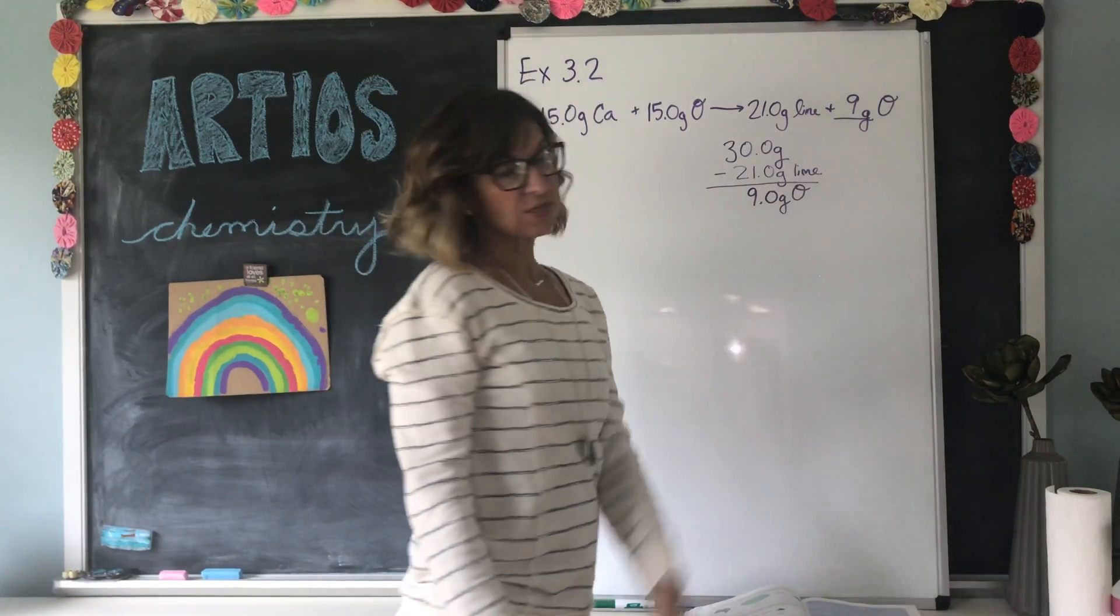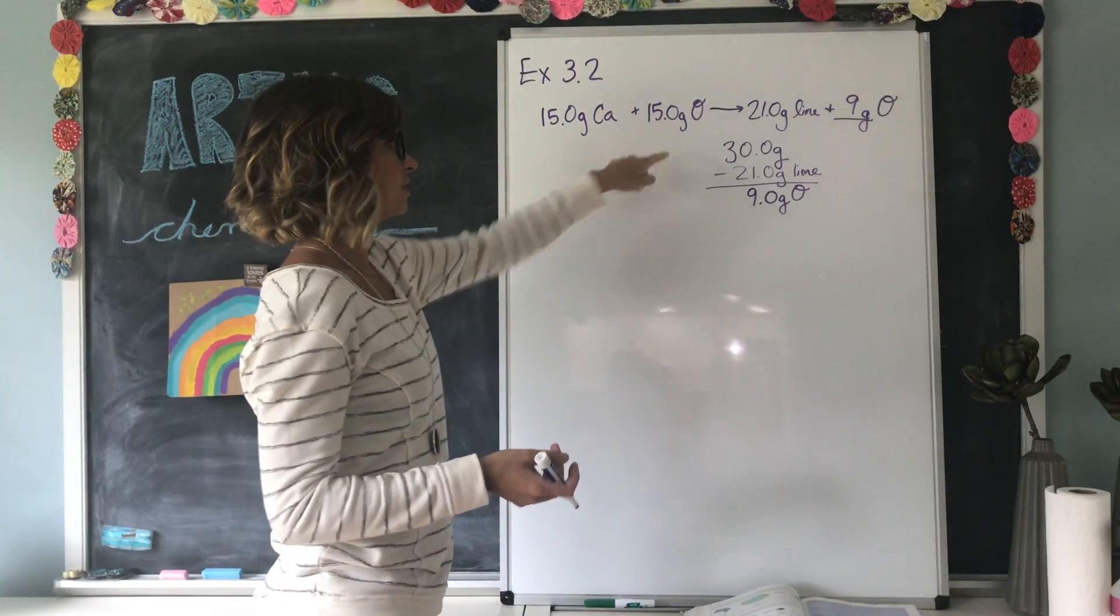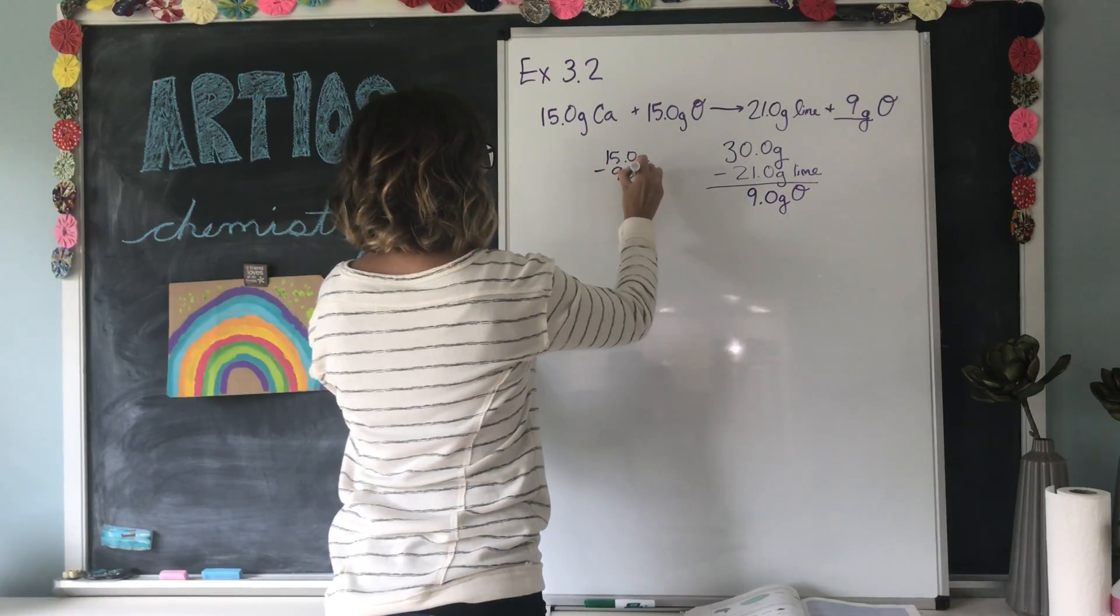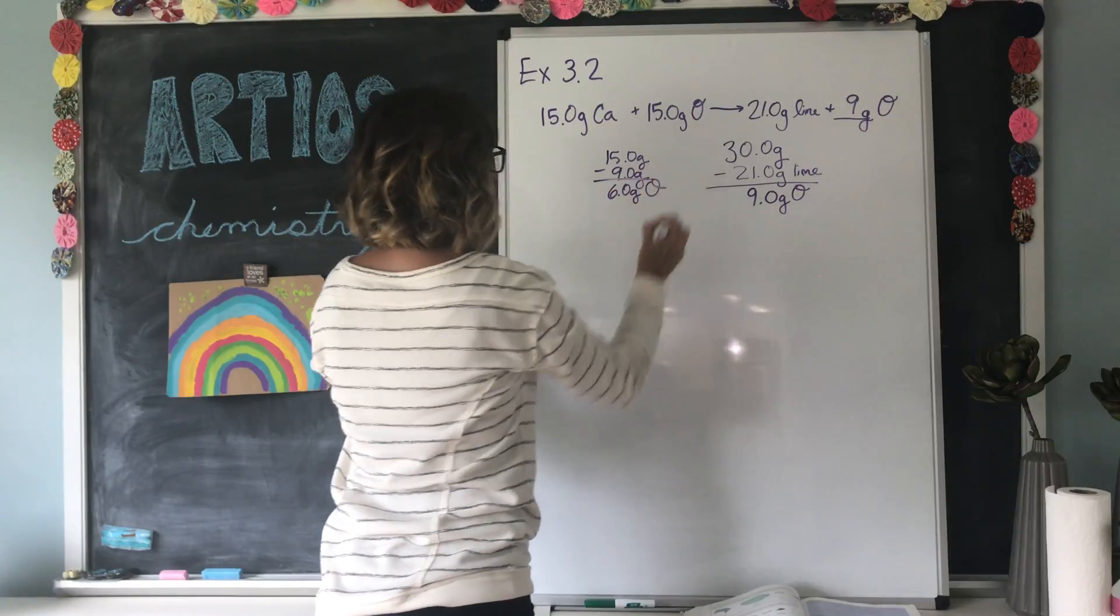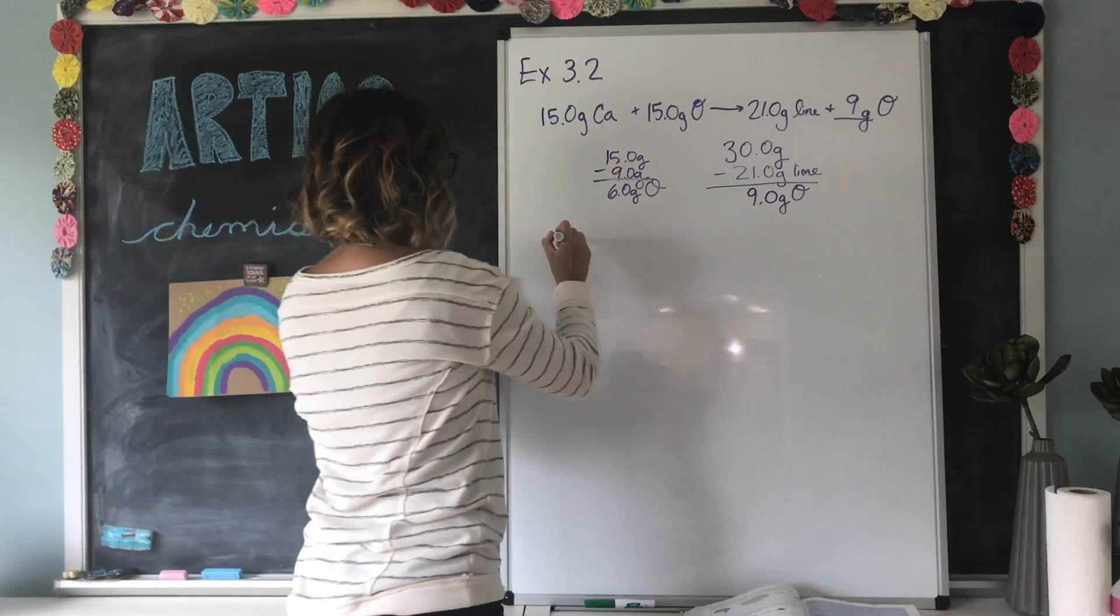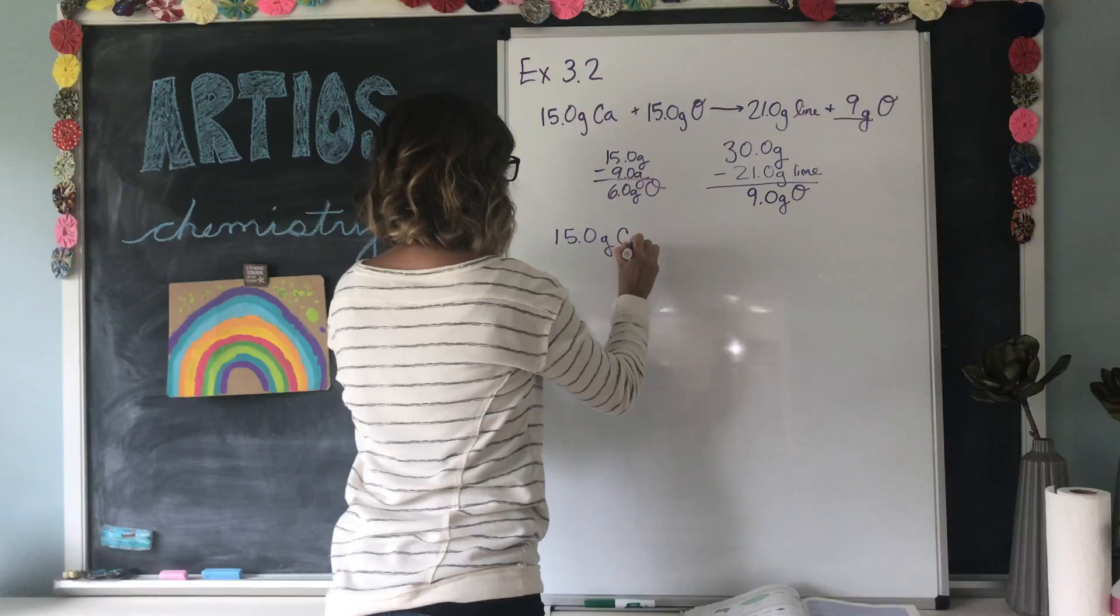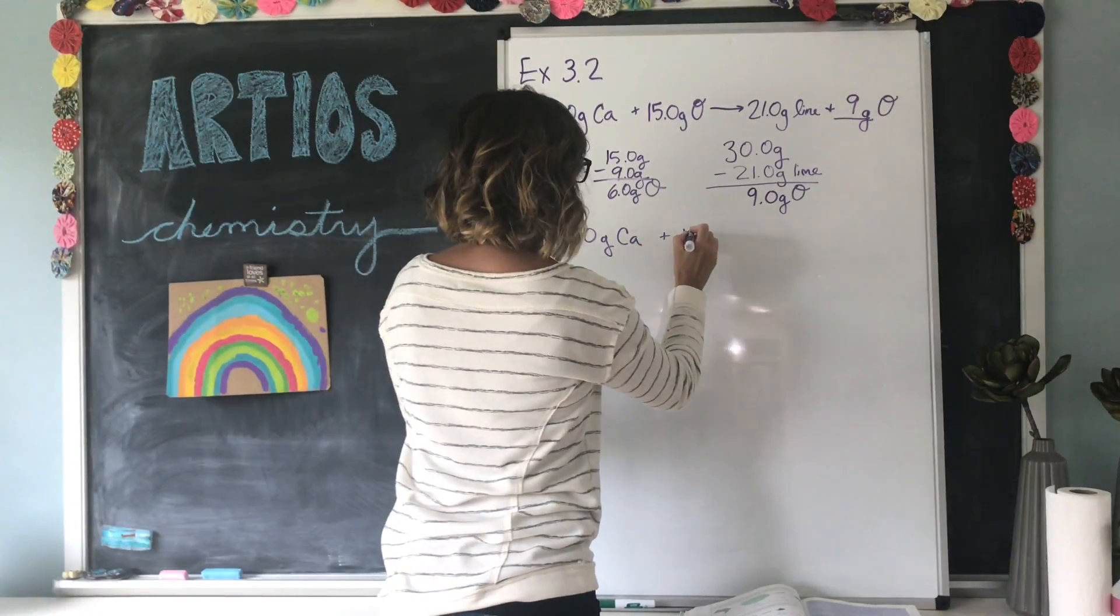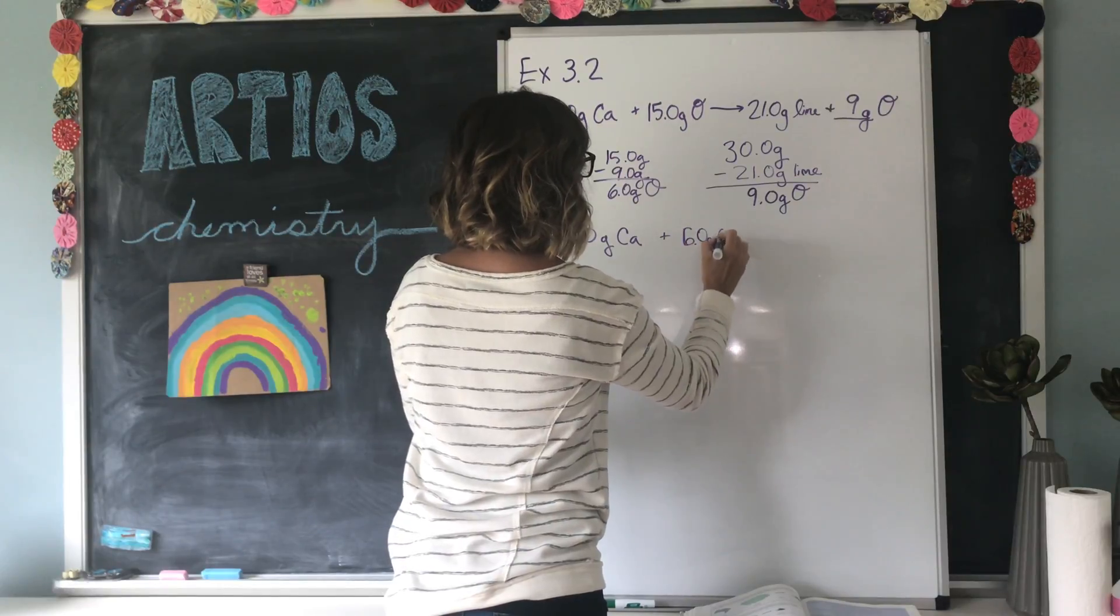So 9 grams of oxygen was left over, which means 6 grams of oxygen was used because we started with 15, right? 15.0 grams minus 9.0 grams left over gives us 6.0 grams of oxygen actually used. So the recipe for making lime would be 15.0 grams of calcium plus 6.0 grams of oxygen.